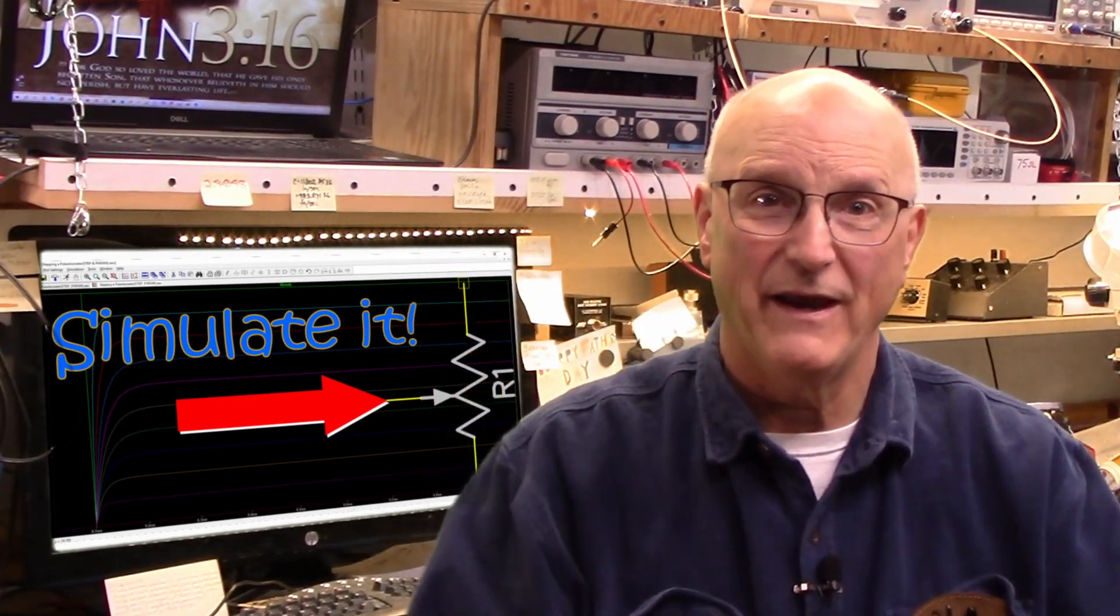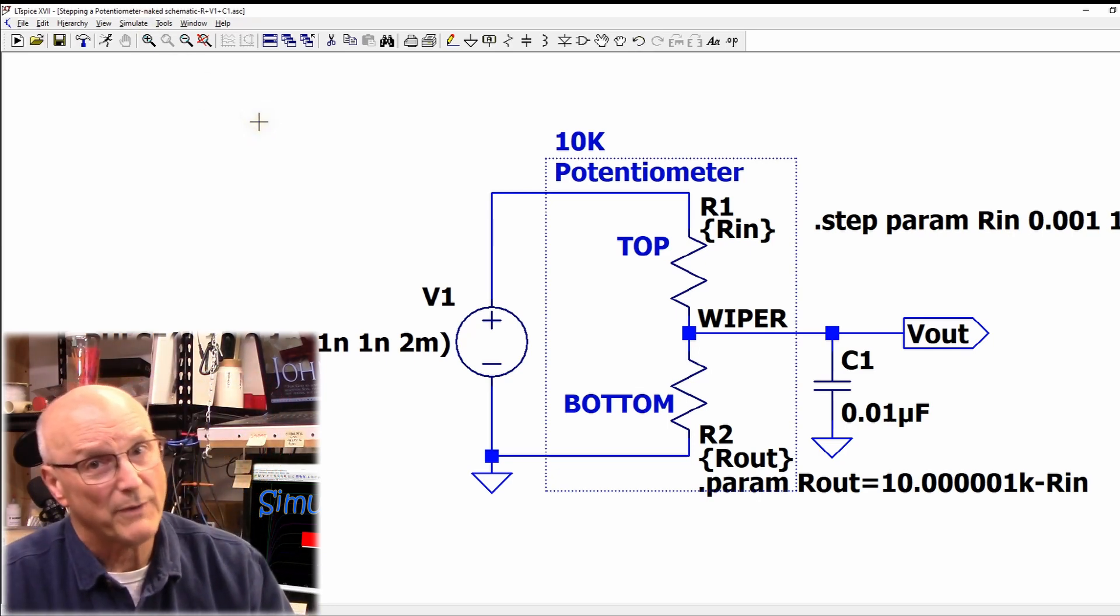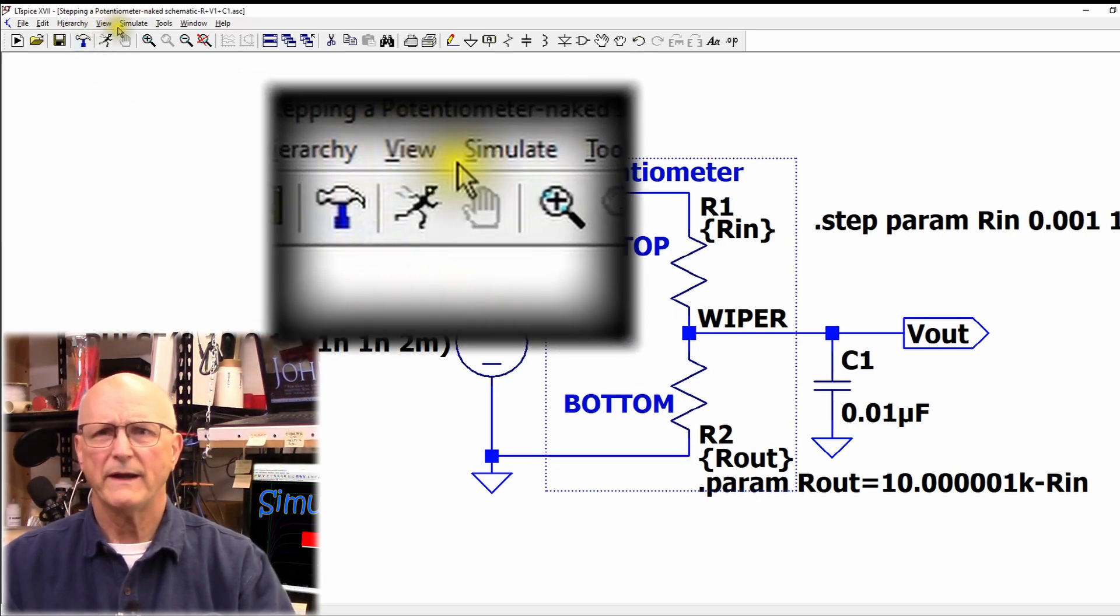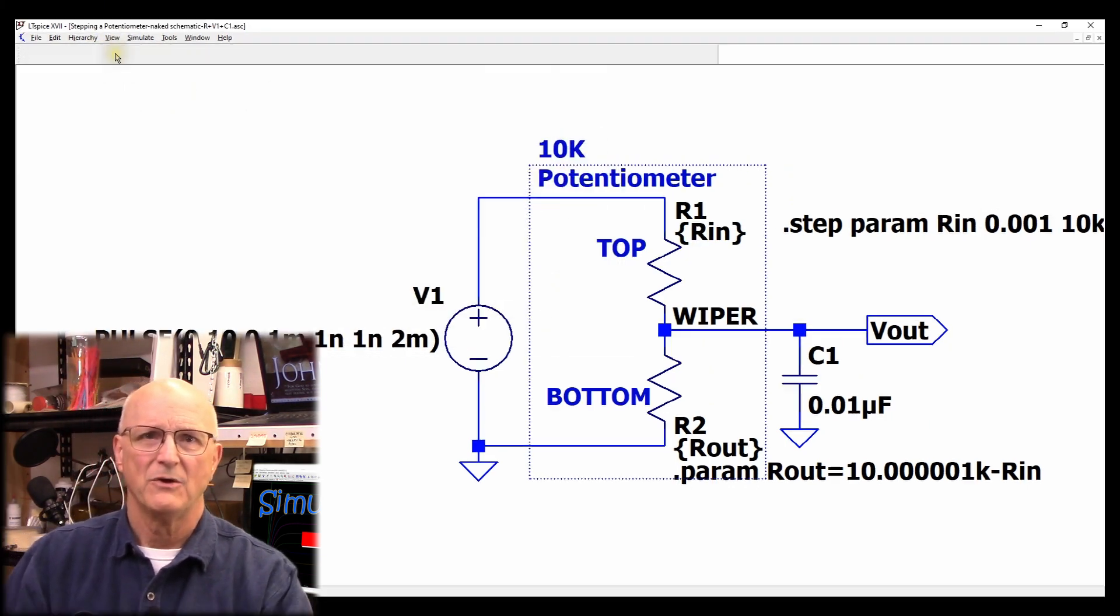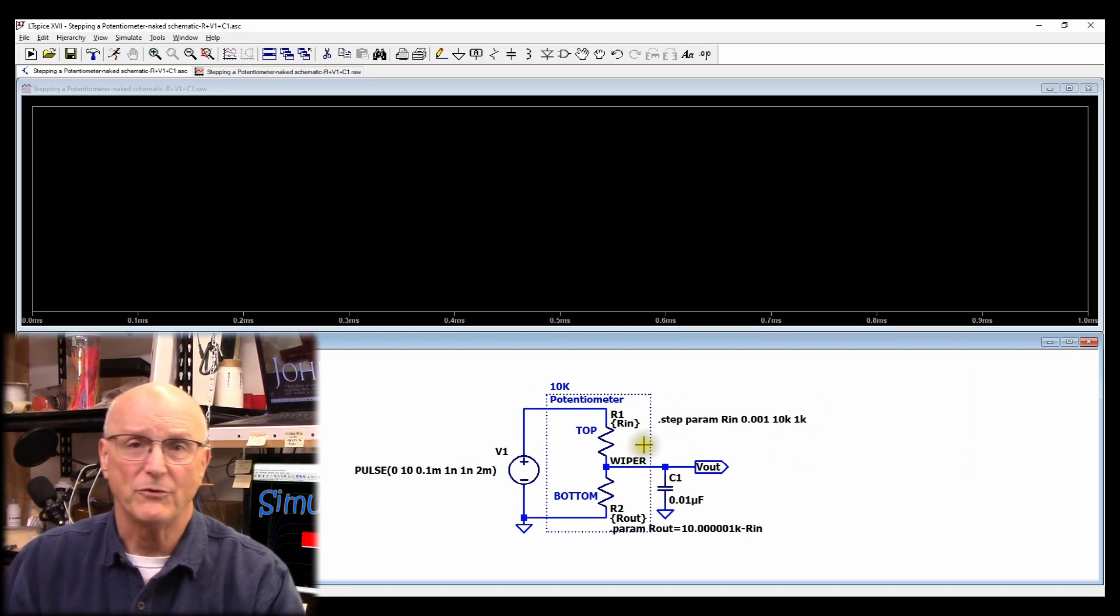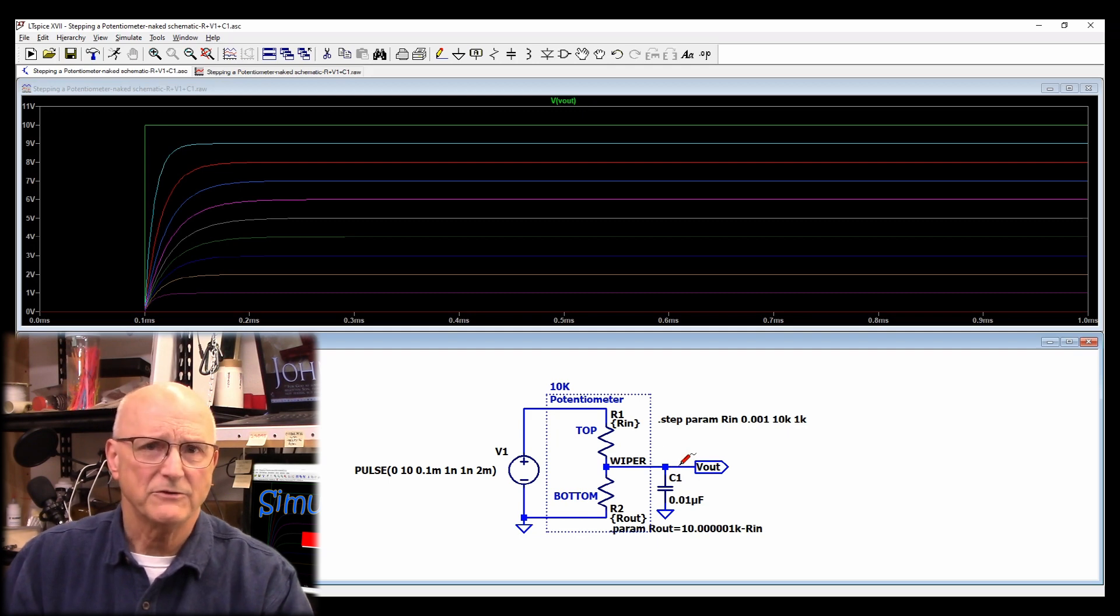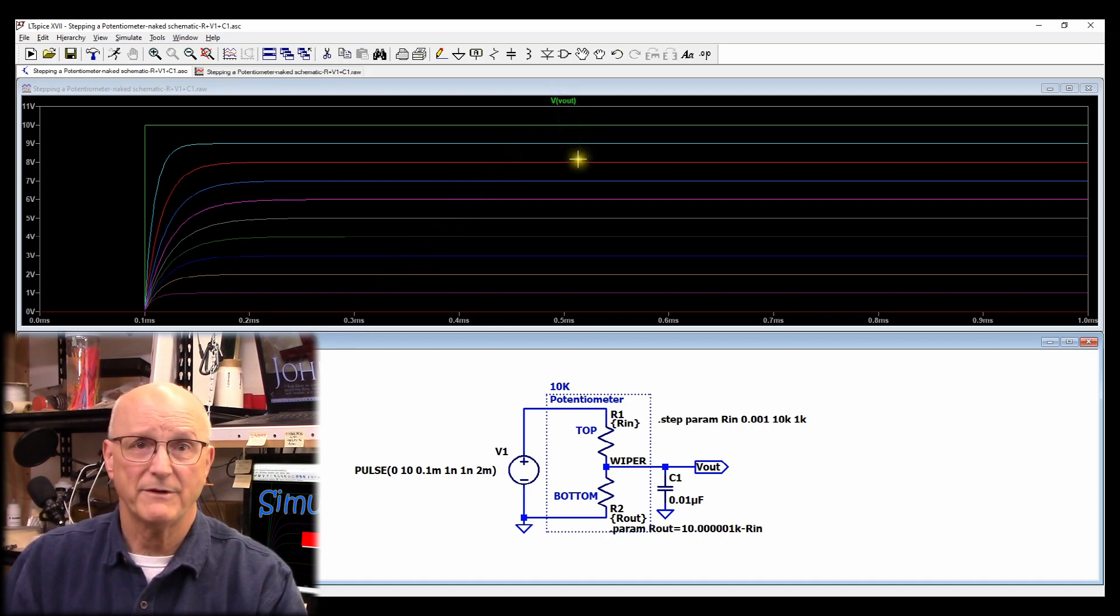Now we're ready to simulate. We start the simulation either by typing CTRL S or by clicking on the running guy icon on the toolbar. We wait for LTSpice to complete its work. I'm interested in the voltage at Vout, so I take my probe icon and click on that net. The results appear in the plot above. We can now see the results of each of the values of our potentiometer.